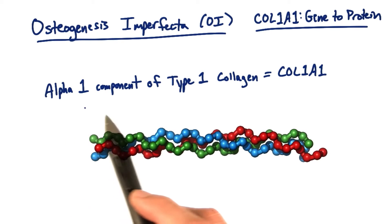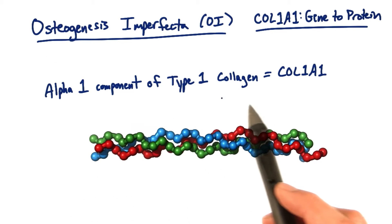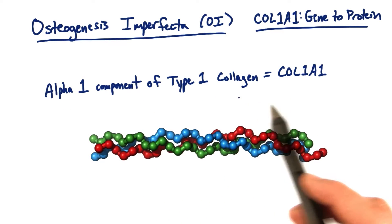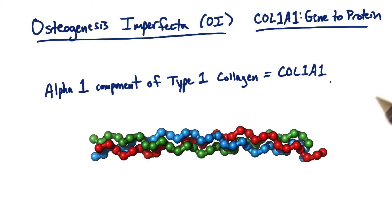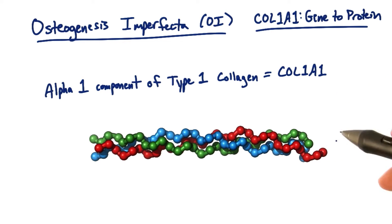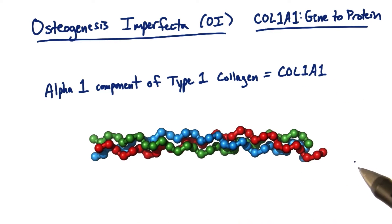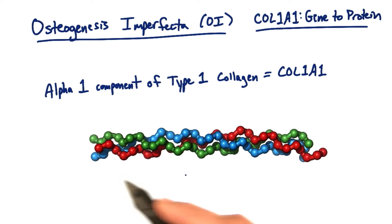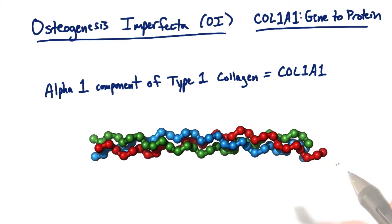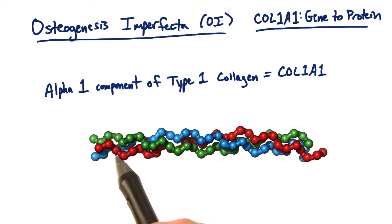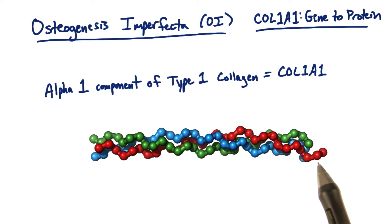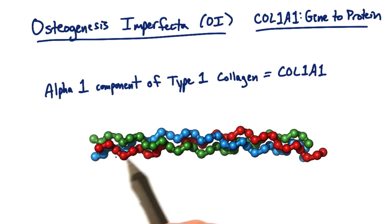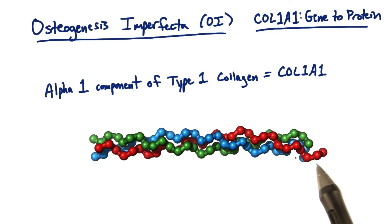The gene that codes for the alpha-1 component of type 1 collagen is Col1A1, and it's essential for building the collagen fibers like you see here, normally in the form of a triple helix. If you follow the colors closely, you can see the red spiraling around the structure, and the green and the blue doing the same thing.